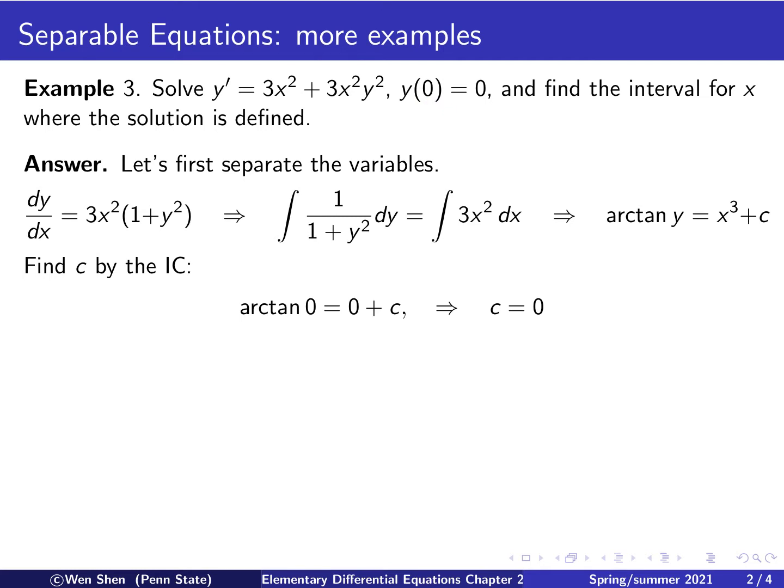Now we can find the constant c by the initial condition. y(0) is 0. So when x is 0, y is 0. So plug in arctan of 0 equal to 0 to the cube plus c, and then this gives us c = 0. Now putting c = 0 back into the general solution, we have the solution arctan of y equal to x cubed. The solution will satisfy the initial condition.